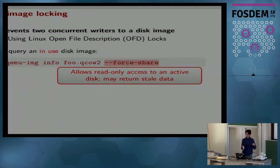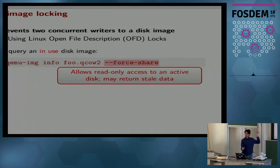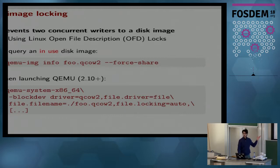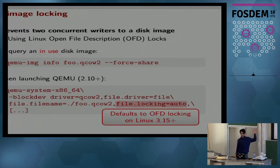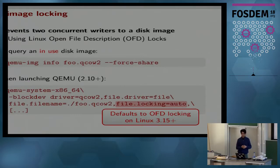There are some valid cases for this — like qemu-img info, which falls under an area where you can safely query an in-use image. For example, OpenStack uses this knowingly, aware that there can be potentially stale data, because it runs this command in a loop so that if it even misses the information, it will catch up on the next run. On recent QEMU, the same locking mechanism can be specified when you configure block devices via the locking option — it defaults to open file description locks if your Linux kernel supports them, otherwise it defaults to POSIX locking.